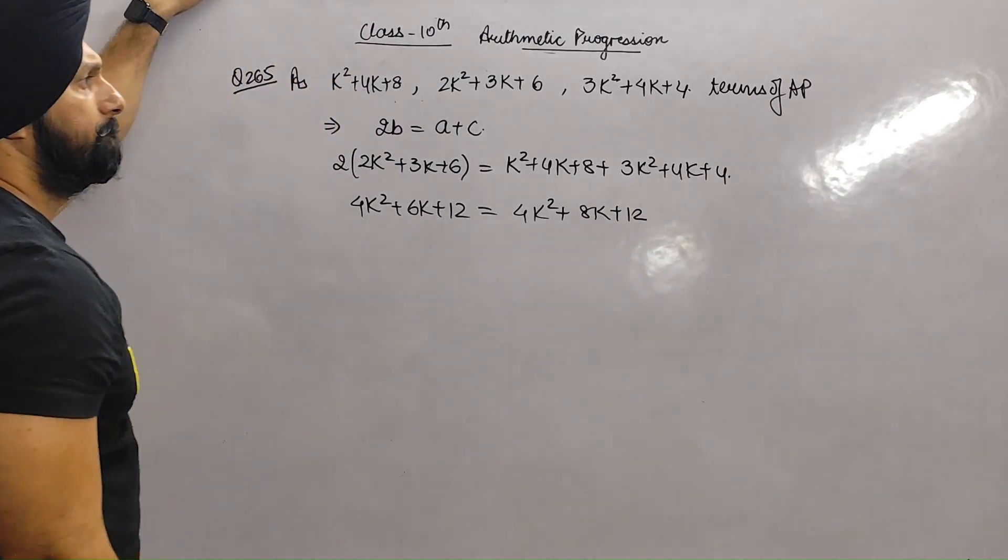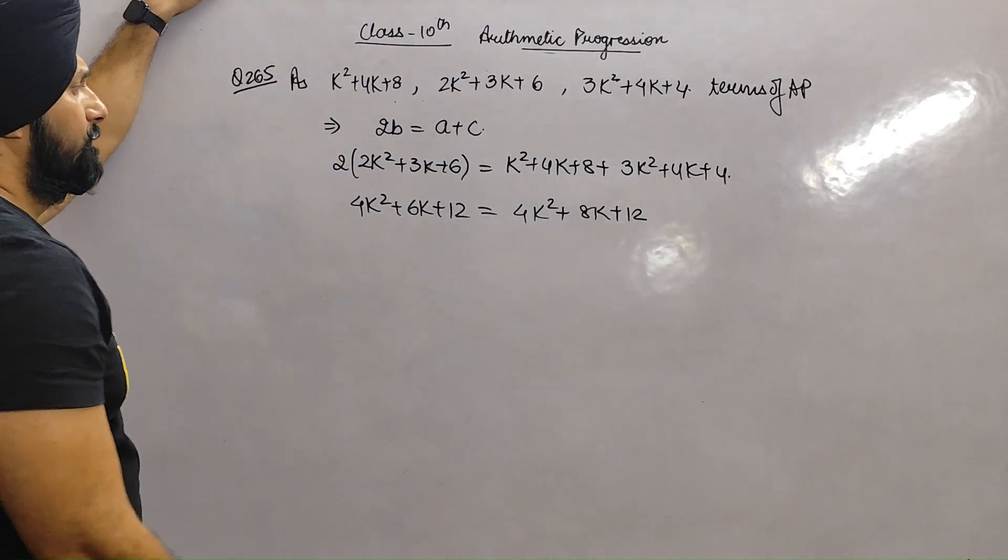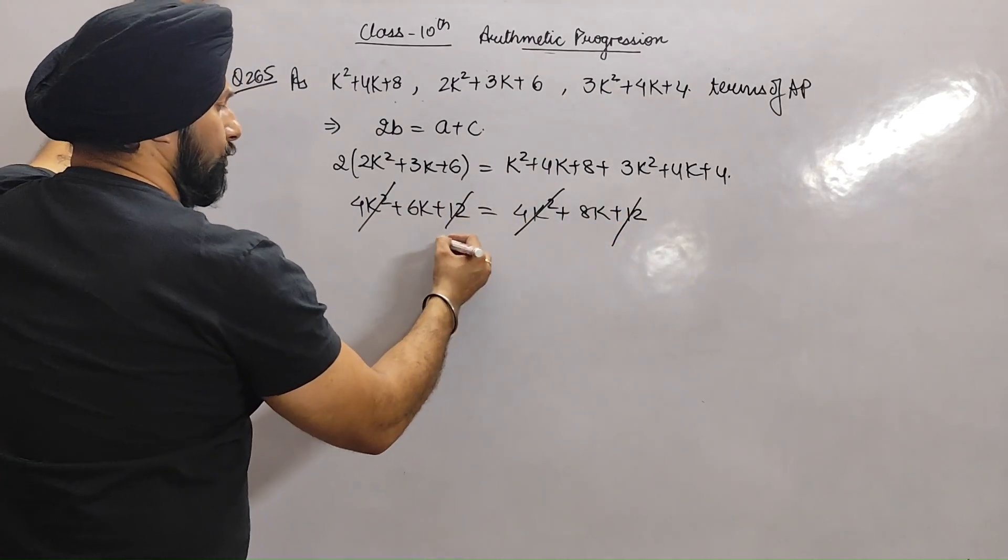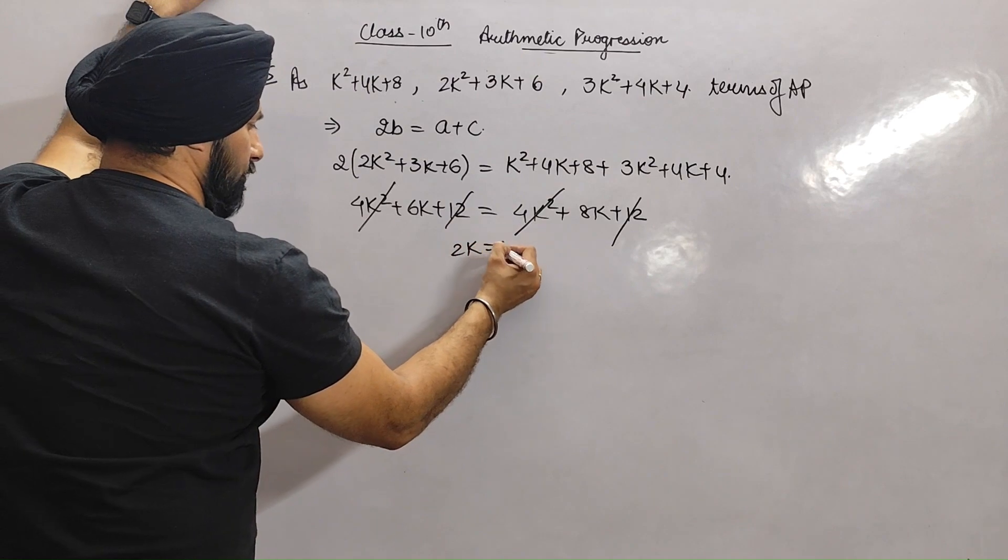4K square and 4K square cancel, 12 and 12 cancel. 2K is equal to zero, so K value is zero. Is that clear?